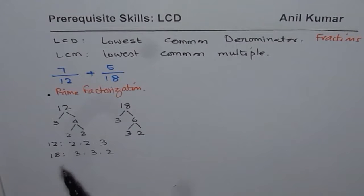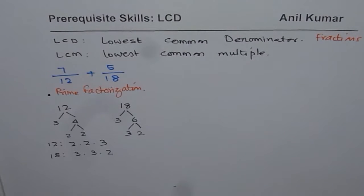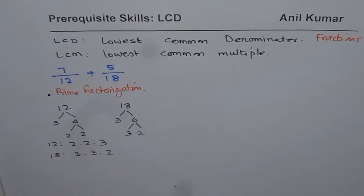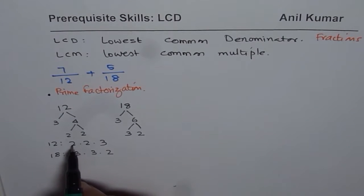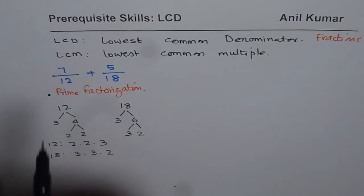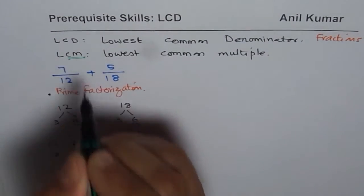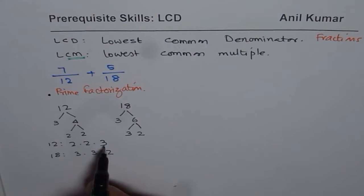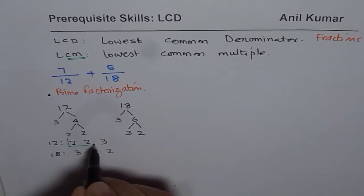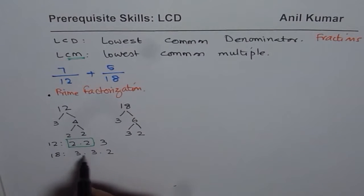Now using these prime factors, how do you find the lowest common denominator — or lowest common multiple of these two numbers? The technique is we have to consider each and every factor. If we consider 2, we need to see where we have more of 2. We see more 2's for 12 (two 2's), fewer in 18 — so we use 12's 2's and disregard 18's.